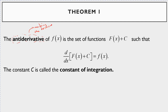So if you have a function, how do you undo the derivative? Some function f of x is a set of functions that we'll call capital F of x plus some c, such that when you take the derivative of this anti-derivative function, you get back to f of x. That's what an anti-derivative is. We're going to call c the constant of integration — it's a constant. When you take the derivative of a constant, it's just zero; it goes away.